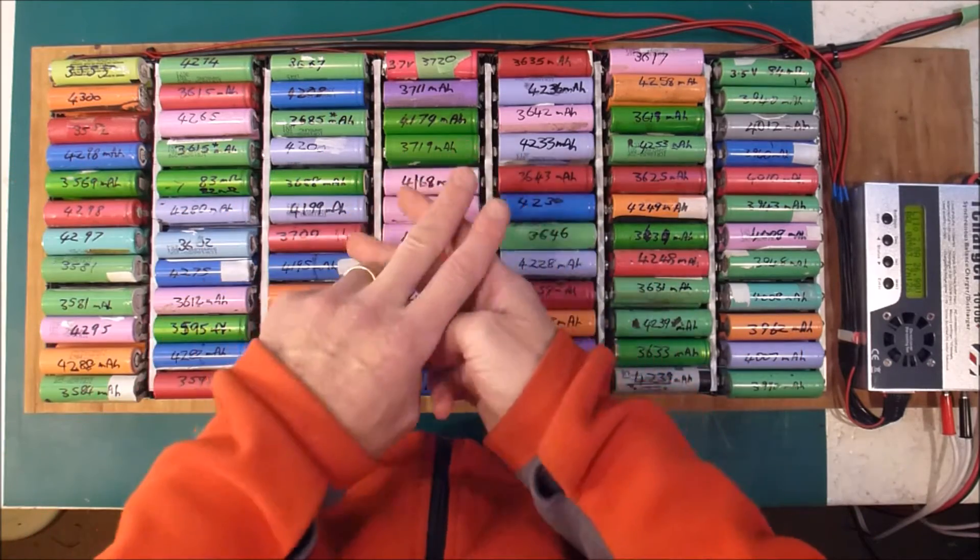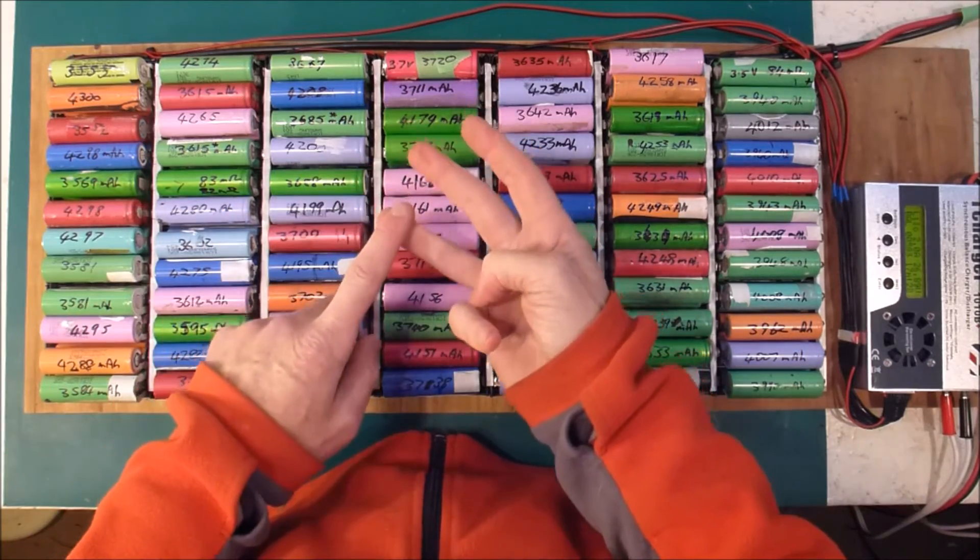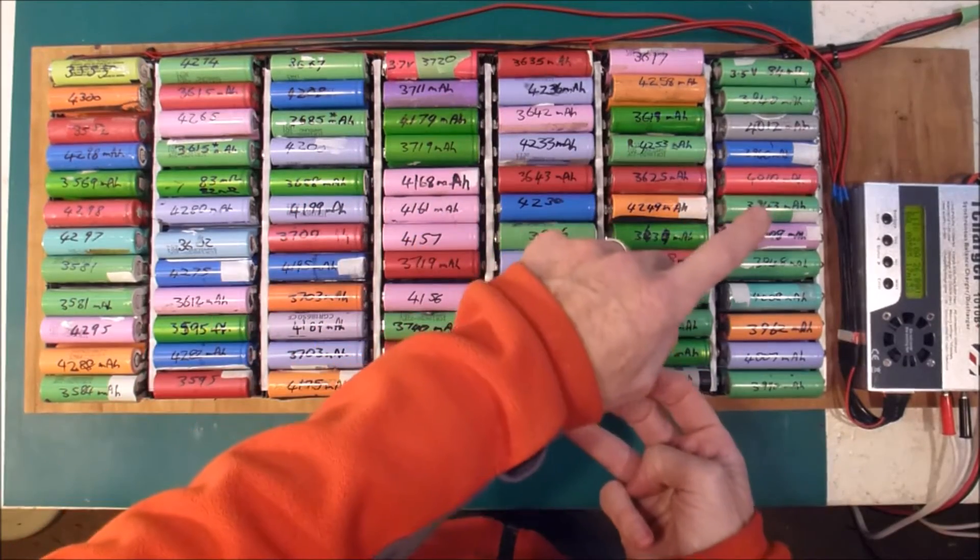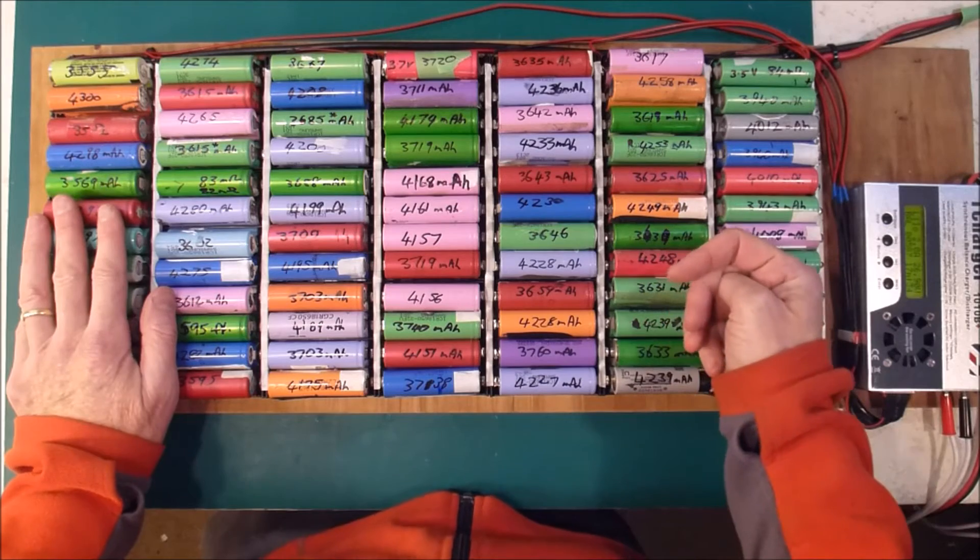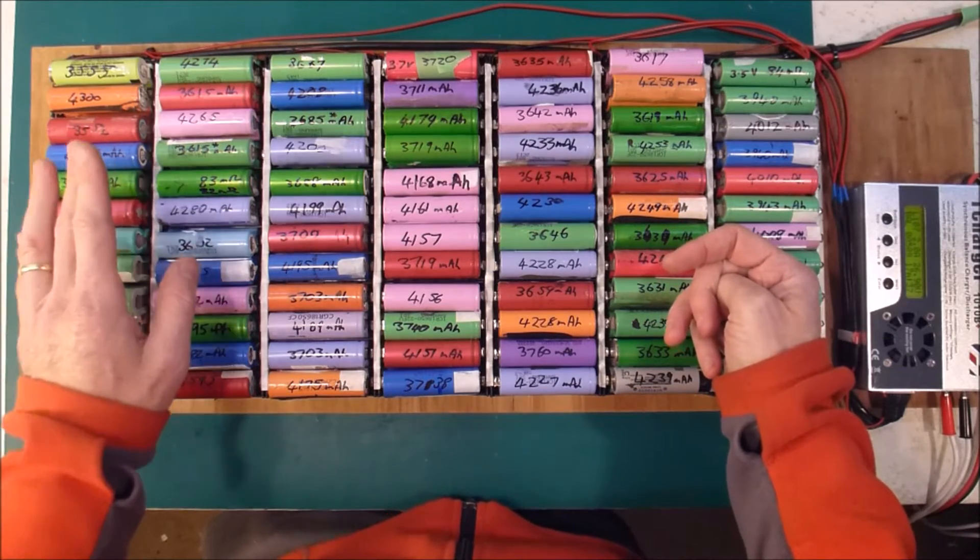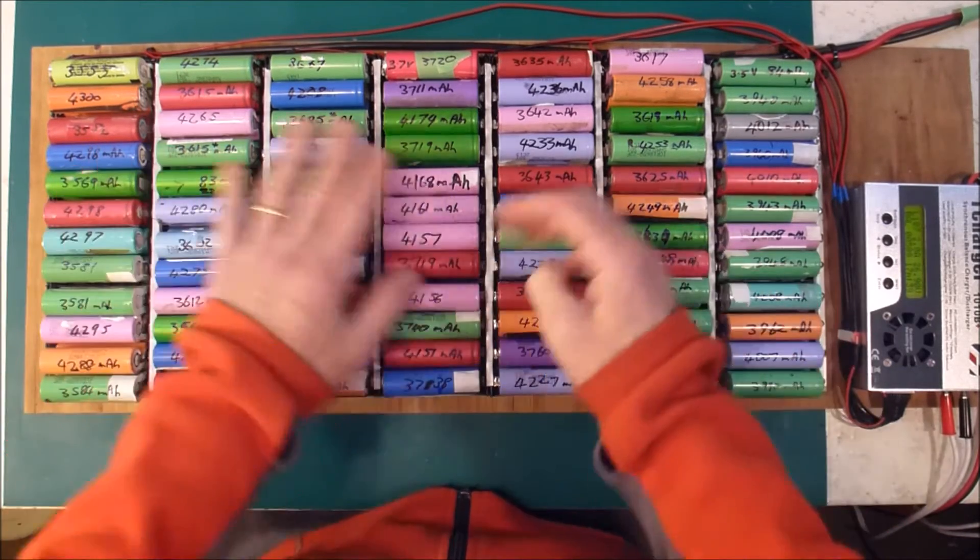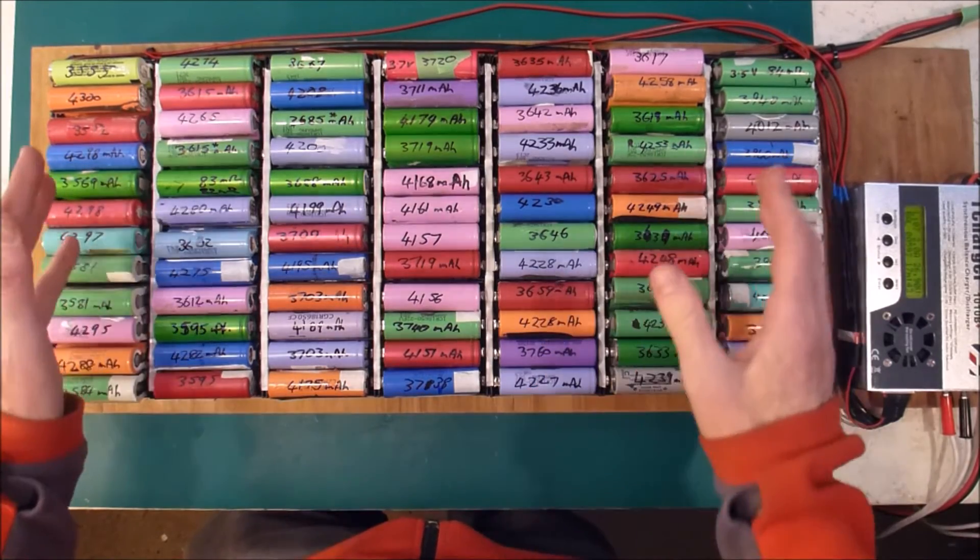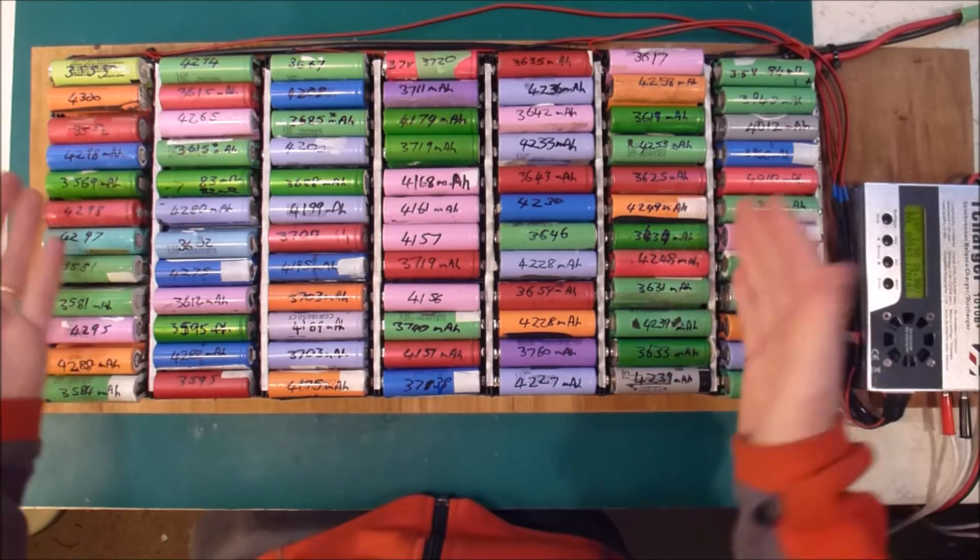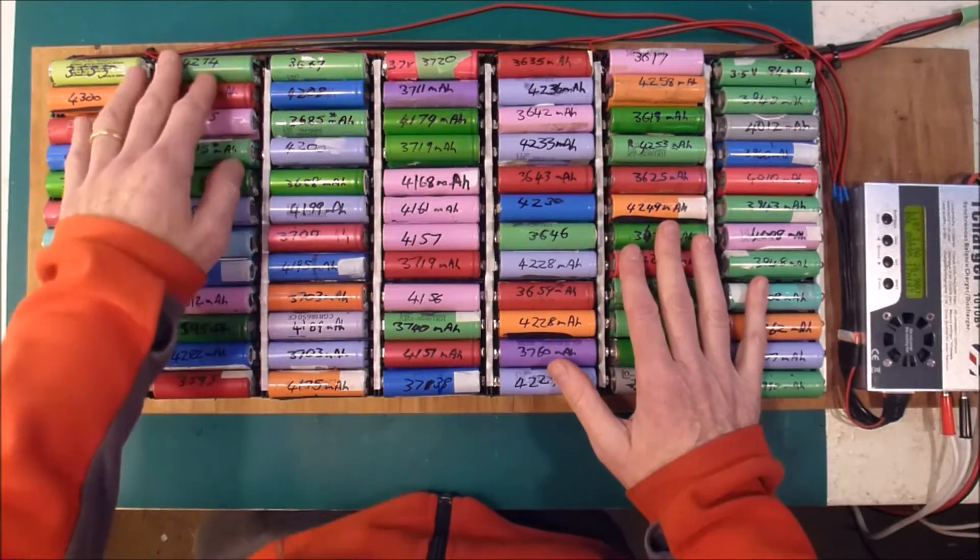Because a normal BMS does three things. It balances, and if I'm paying particular attention already with a cell logger, then I probably don't need the automatic balancing function. I can balance it manually every now and then, maybe once a year or however often it goes out of whack.